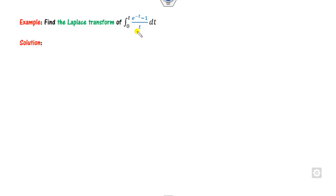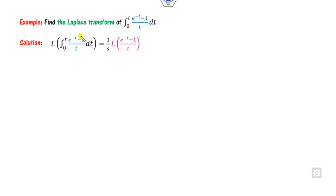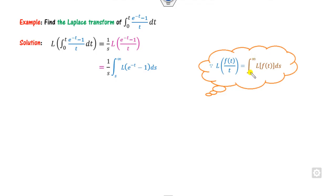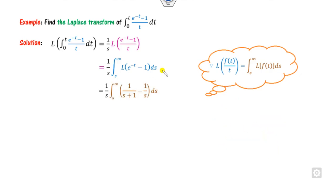Let's start with 10 to 15 examples quickly. You have to find the Laplace transformation of this — the limit is from 0 to t, so we can apply the rule: divide by s, and the remaining part is the Laplace of this portion. Now how do you find the Laplace of this? Because it is divided by a polynomial of degree 1, you have to integrate from s to infinity. What is the Laplace of e^(-t)? It is 1/(s+1). And the Laplace of 1 is 1/s.